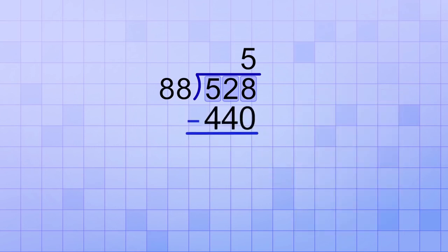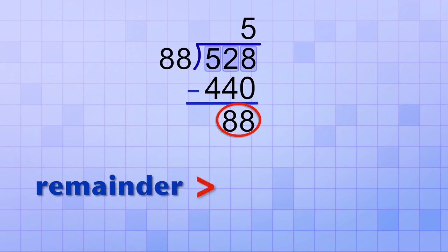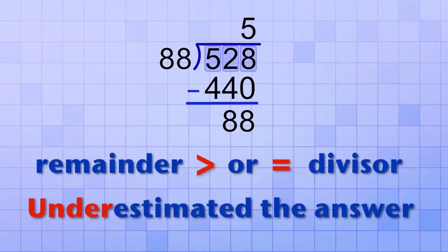Hmm… looks like our estimate was too low. Whenever the remainder is greater than or equal to the divisor, it means we underestimated the answer. In fact, since our remainder is equal to the divisor, it means we could have divided exactly one more 88 into 528.